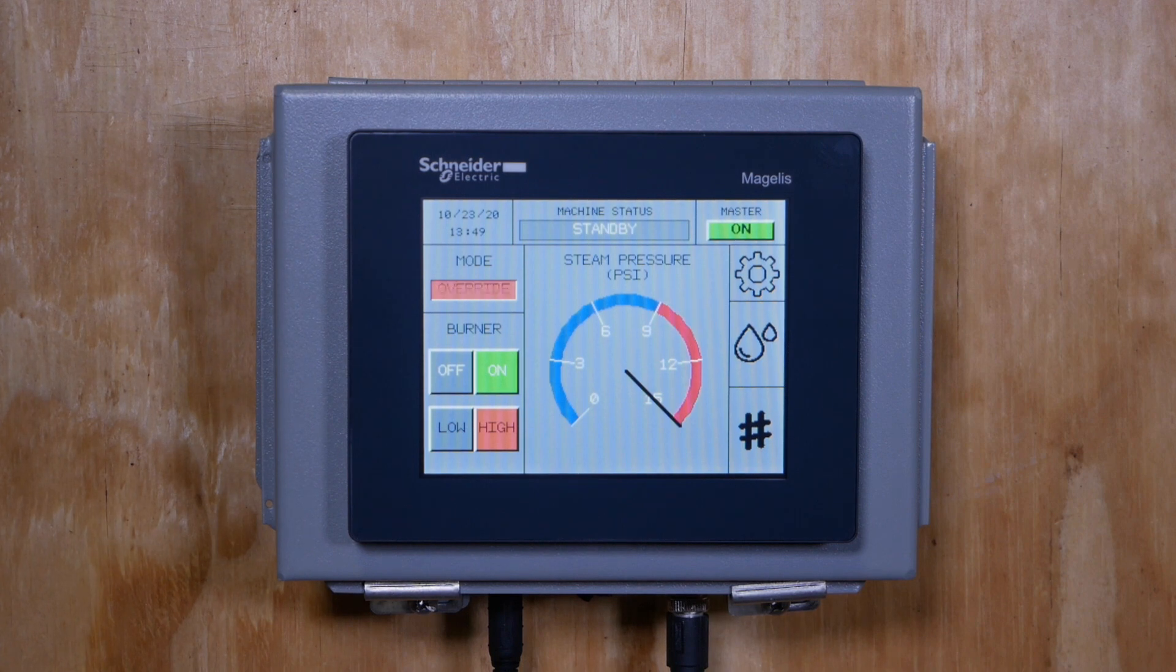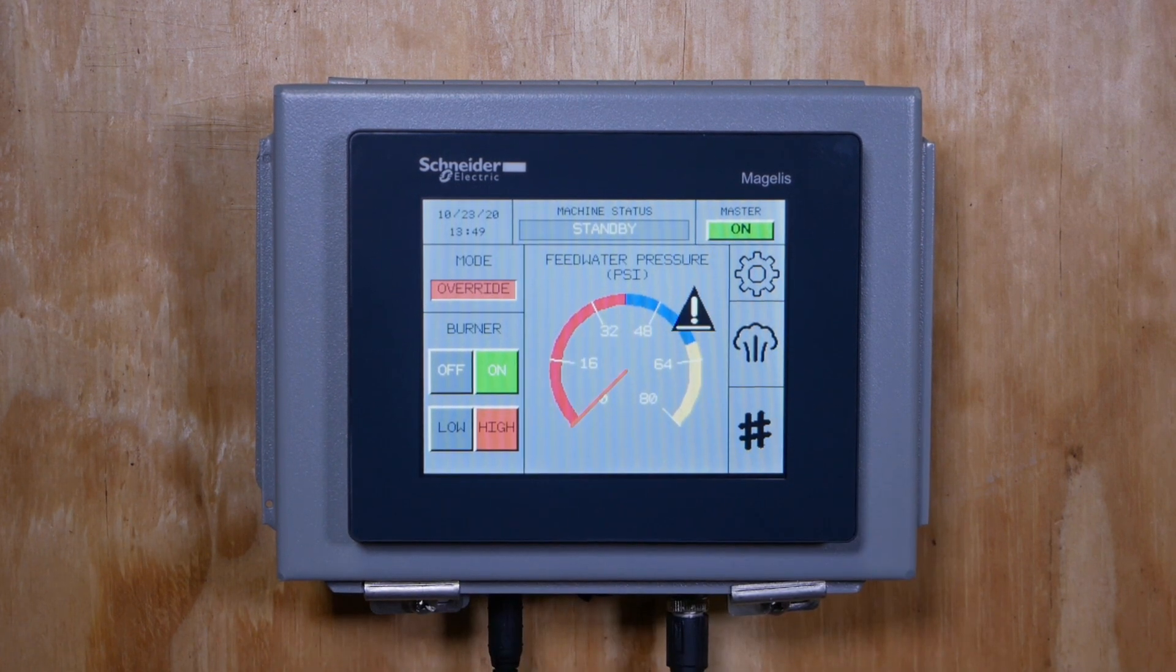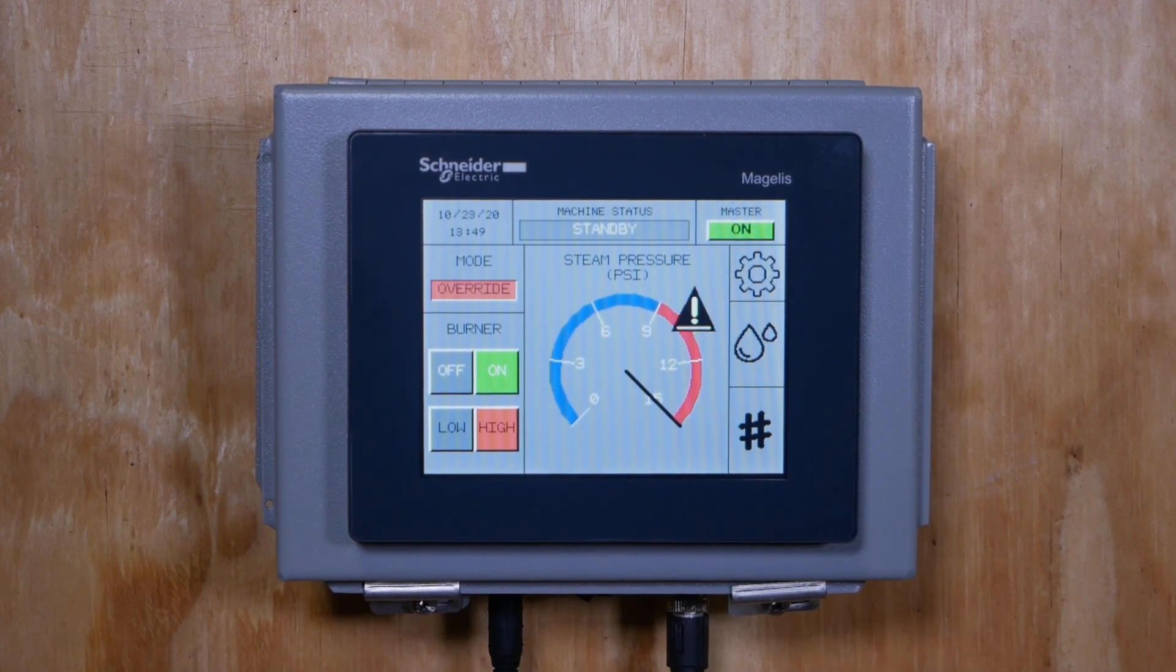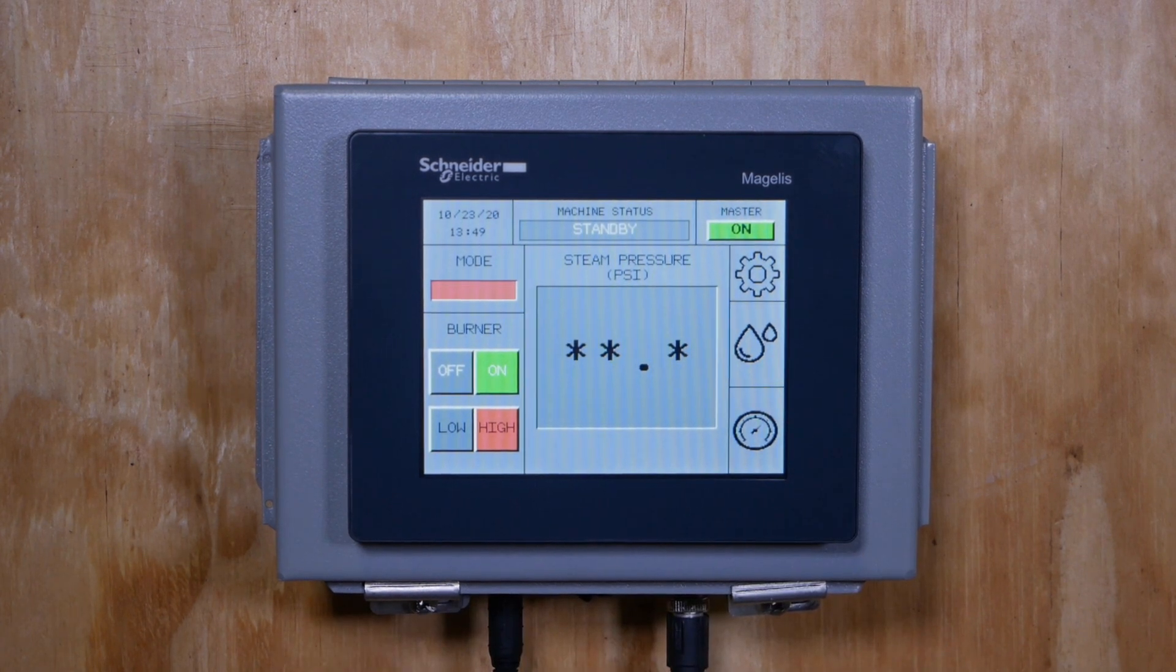Continuing on, the center section of the screen will display either your steam pressure or your incoming water pressure. Toggle between the two by tapping the display toggle. The display can be toggled between a digital or graphical interface to suit your preference.